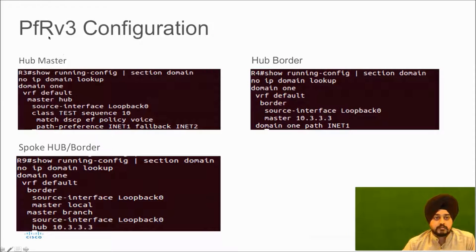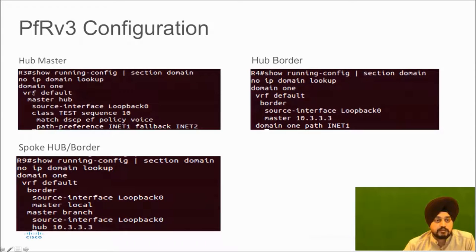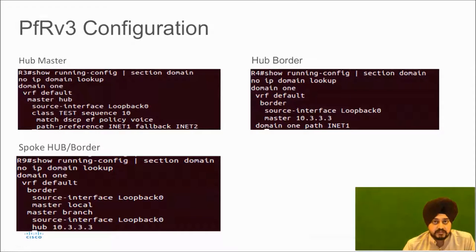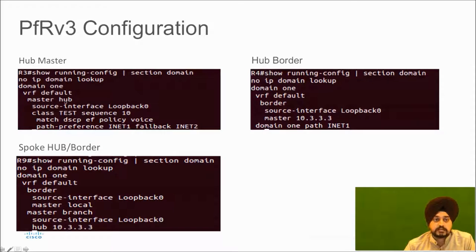Let's talk about PFR version 3 configuration. The first configuration is on the hub master. It requires you to configure a domain — 'domain' is the keyword and 'one' is the domain name, which can be set per user preference. PFR v3 is VRF-aware, but here we use the global configuration with 'vrf default'. 'master hub' defines this router as the hub master, and 'source interface loopback 0' assigns a router ID to PFR.